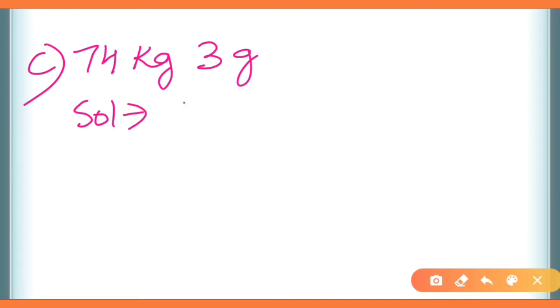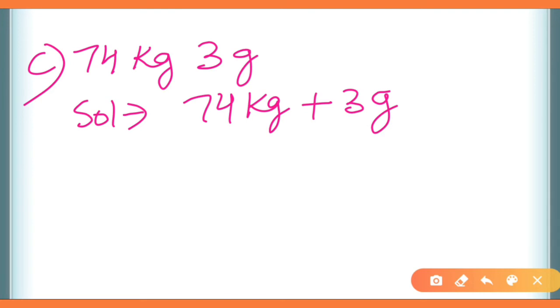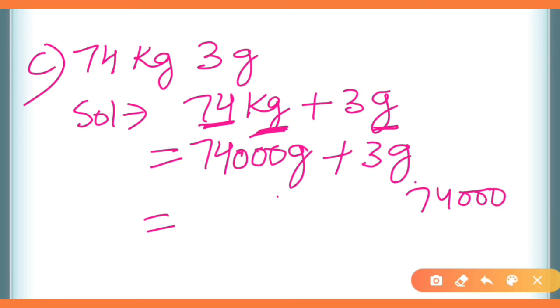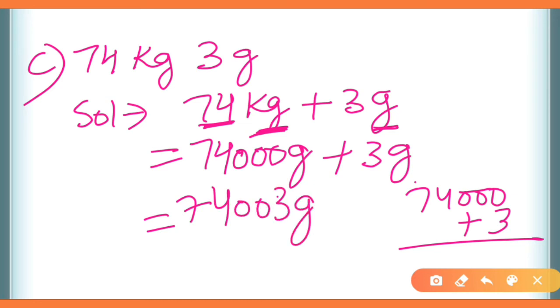One more example: 74 kilograms and 3 grams। Same तरीका — 74 kilograms को grams में convert करेंगे: 74,000 grams। Plus 3 grams। 3 को ones place पर add करेंगे। तो answer आएगा: 74,003 grams।